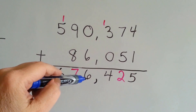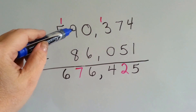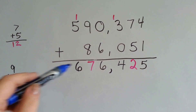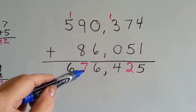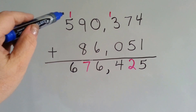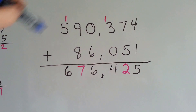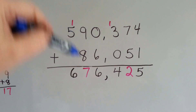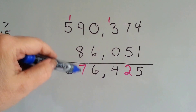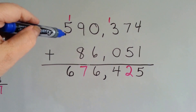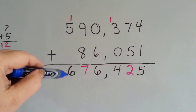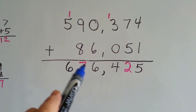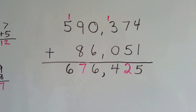0 and 6 is 6. 9 plus 8 is 17, and again we put the 7 down here, but we have to regroup the 1 to the next column, because we can't put two digits into one column. 5 plus 1 is 6. So our answer is 676,425.